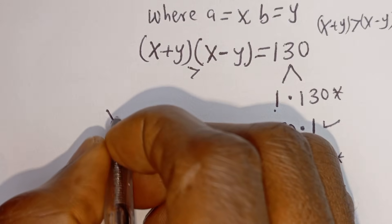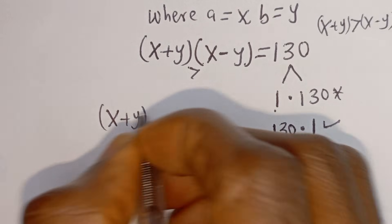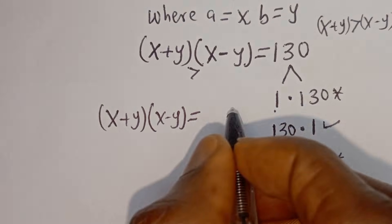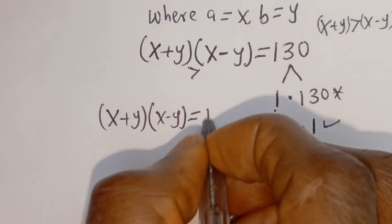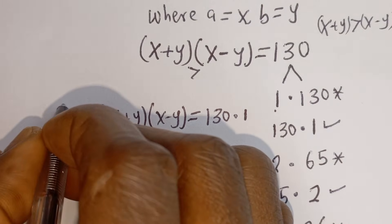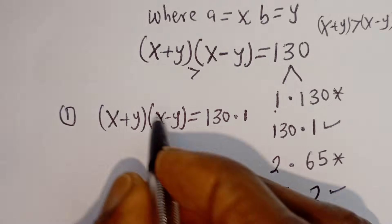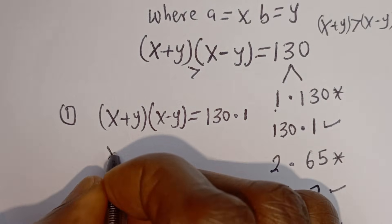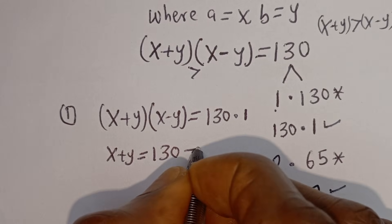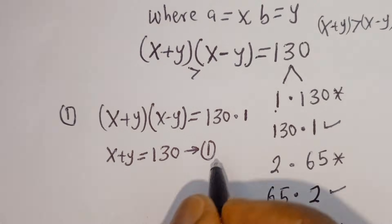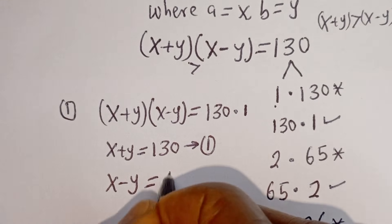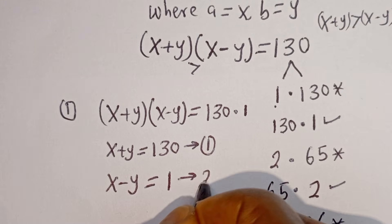For the first case, (X + Y)(X − Y) = 130 × 1. This gives us equation 1: X + Y = 130, and equation 2: X − Y = 1.